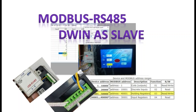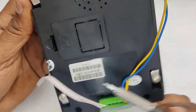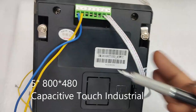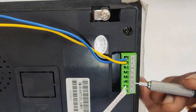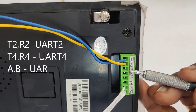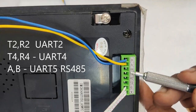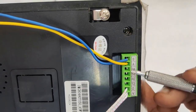Hello all. This video is about implementing Modbus communication protocol on a D-Win HMI display. Modbus is the communication protocol and we will be using RS-485 as the physical media. Here D-Win is used as slave in this first video. We have a 5-inch 800x480 display, capacitive touch, industrial grade. On the right side there is a green connector with T2R2 for UART2, T4R4 for UART4, and A/B for UART5 which is RS-485.